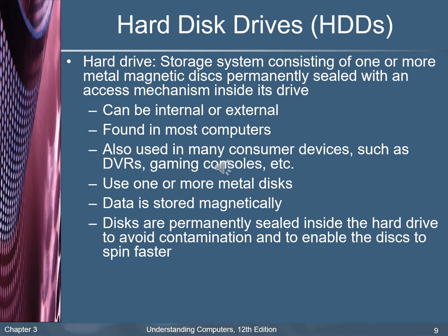The hard drive — or what we commonly call the hard disk — is a storage system consisting of one or more metal magnetic disks permanently sealed with an access mechanism inside its drive. It can be internal or external. Hard disks are stored in most new computer units and are also used in many consumer devices such as DVR and gaming consoles. Data is stored on the hard disk magnetically using magnetic spots. Disks are permanently sealed inside the hard drive to avoid contamination and to enable the disk to spin faster.